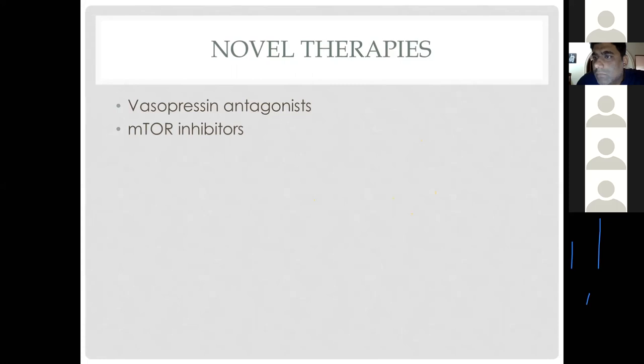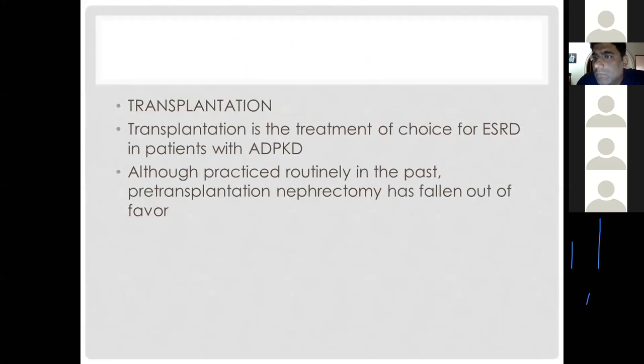These novel therapies — vasopressin antagonists and mTOR inhibitors — are still under investigation, and no clinical trial currently recommends them for routine use. If a patient develops end-stage kidney disease, renal replacement therapy options include peritoneal dialysis, hemodialysis, and transplantation, with transplantation being the definitive treatment of choice.